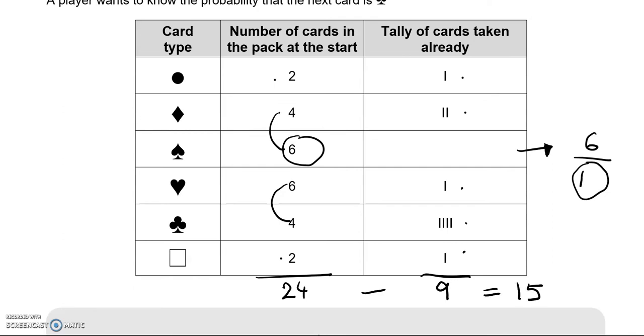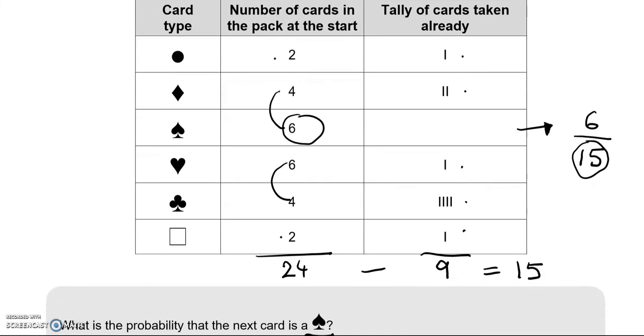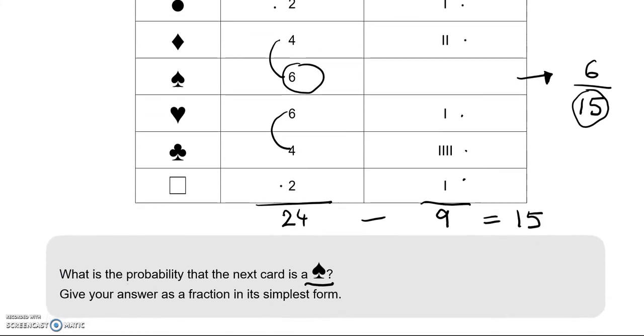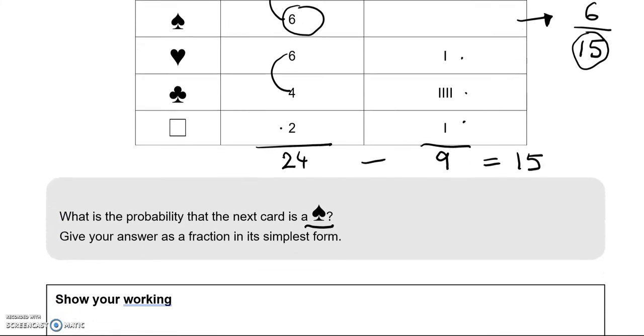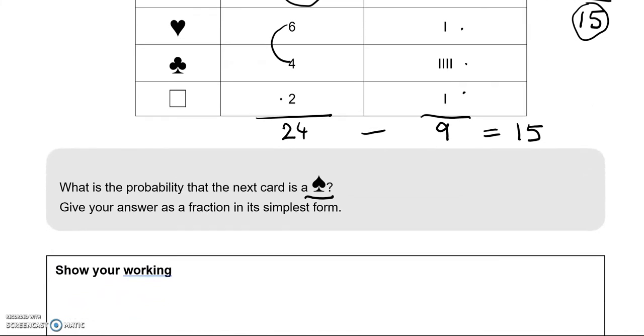So 6 out of 15 is the probability we're after. We've got to write it in its simplest form. So 6 out of 15, we can divide both by 3. So it's going to give us 2 over 5.